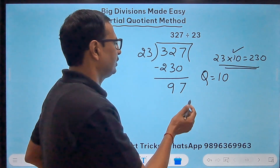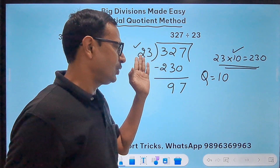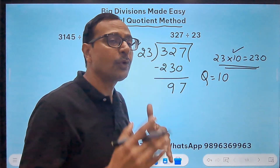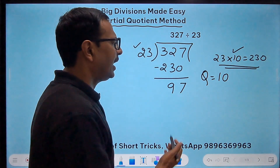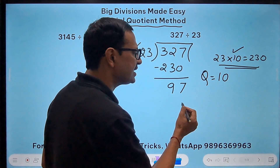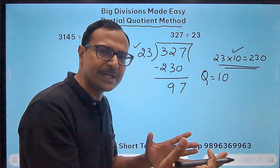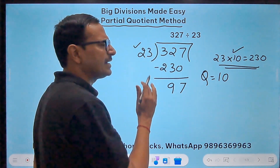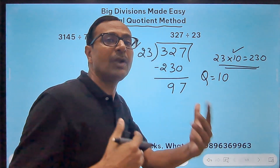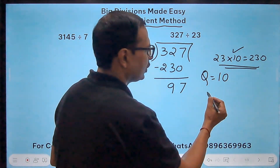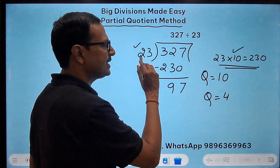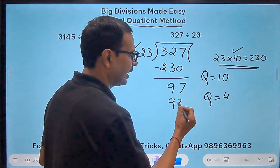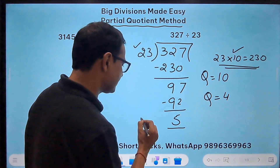Now again I need a multiple of 23 which gets closest to 97. If I don't know the 23 times table, I can subtract 23 repeatedly. But the double of 23 is 46, and the double of 46 is 92. So if I take the quotient as 4, then 23 times 4 is 92, and that gives me 5 which becomes the remainder.